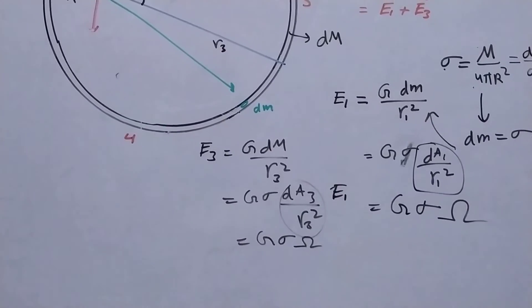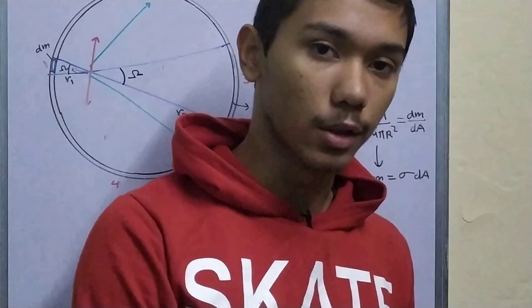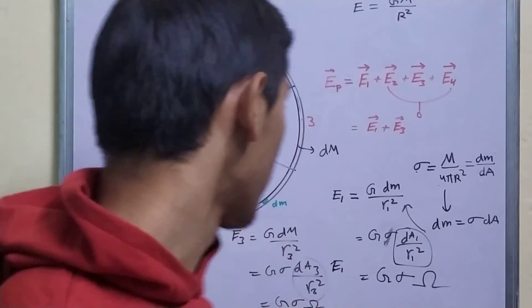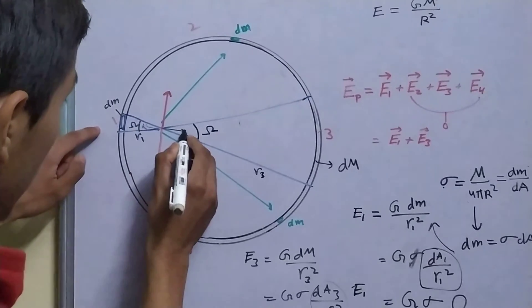But this tells us that E1 and E3 have the same magnitude, but in the opposite directions. This one is E1, E3 will point in something like this.